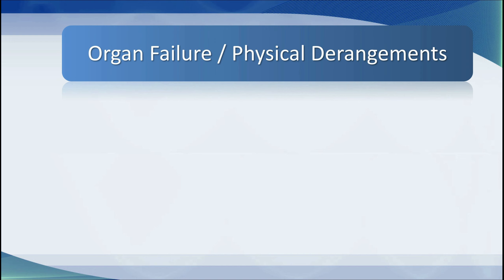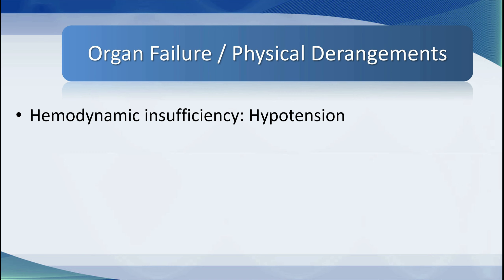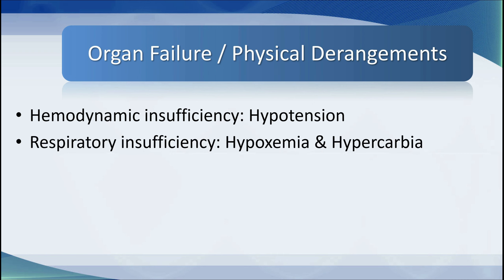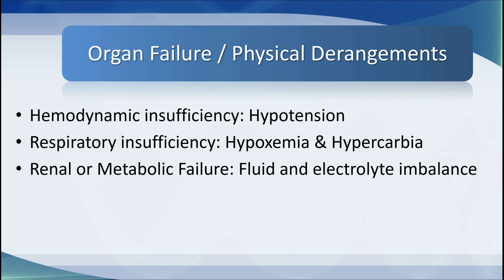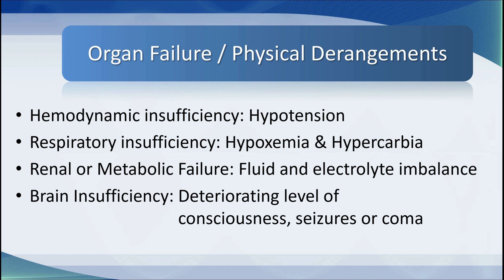Admission to a critical care unit usually involves organ failure or physical derangements. Most commonly, patients are admitted with haemodynamic insufficiency manifesting as hypotension, respiratory insufficiency manifesting as hypoxaemia and hypercarbia, renal or metabolic failure resulting in fluid and electrolyte imbalance, and brain insufficiency characterised by a deteriorating level of consciousness, seizure, or coma.